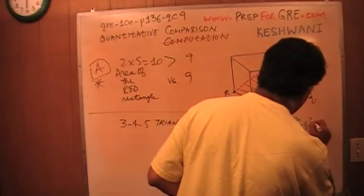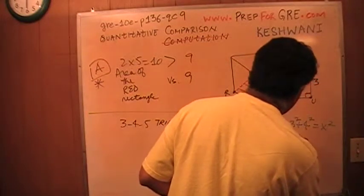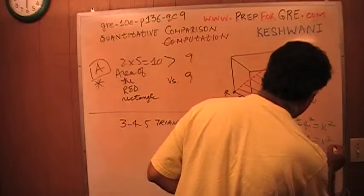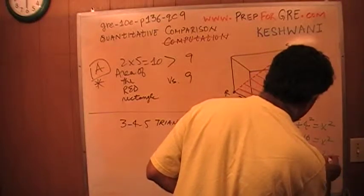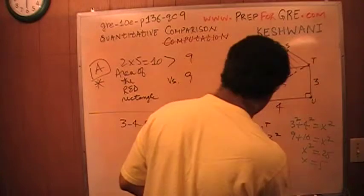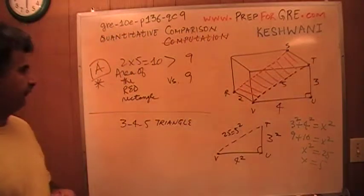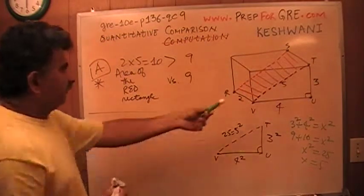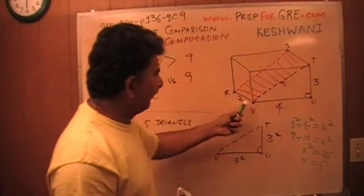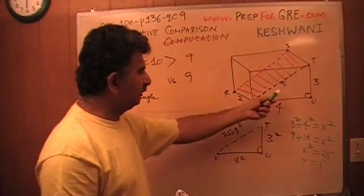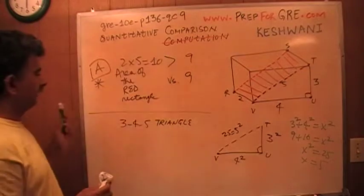3 squared plus 4 squared equals x squared. 9 plus 16 equals x squared. And therefore, x squared is 25 and x is 5. That's where the 25 comes from. And therefore, that's 5 and this side is 5 and this side is 2. Therefore, the area of this rectangular region is simply 2 times 5, which is 10, which is more than 9.